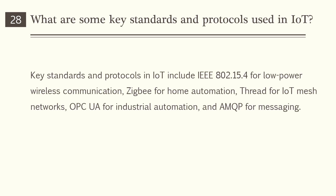What are some key standards and protocols used in IoT? Key standards and protocols in IoT include IEEE 802.15.4 for low-power wireless communication, ZigBee for home automation, Thread for IoT mesh networks, OPC UA for industrial automation, and AMQP for messaging.